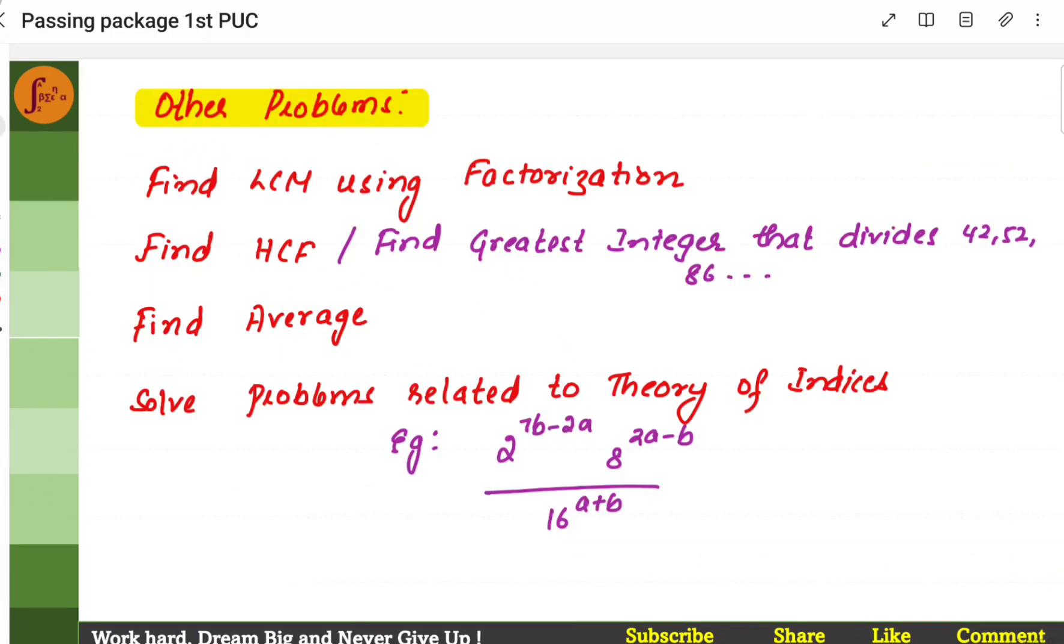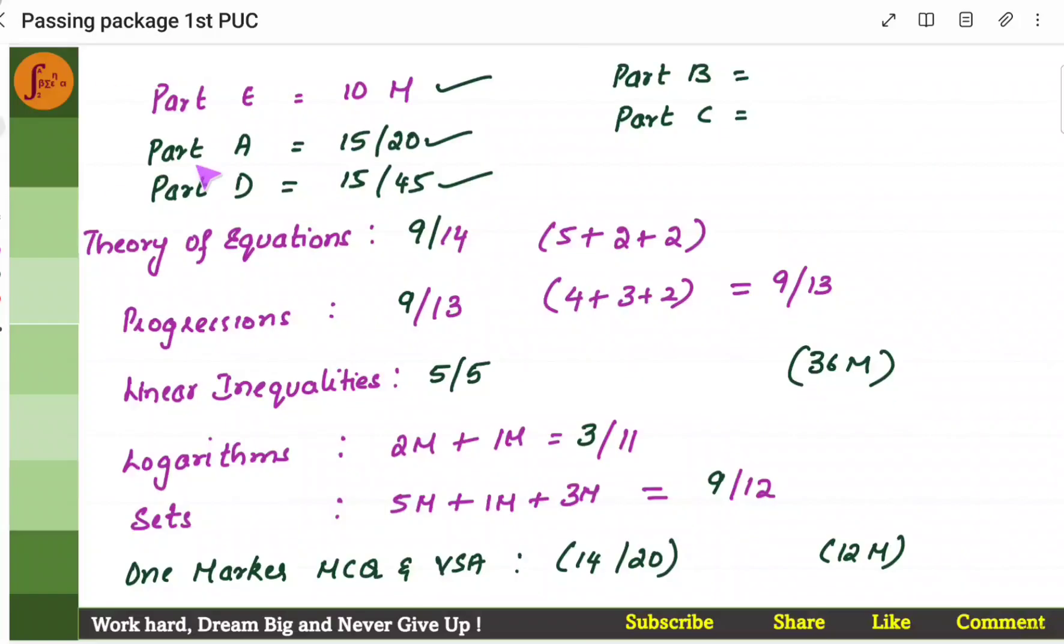Now, there are other problems also, such as finding LCM using factorization, finding HCF, problems related to HCF. That is, finding greatest integer that divides certain set of numbers. Finding average. Then, problems related to theory of indices. Two markers. You can focus on two marker and one marker of theory of indices. You have problems like this. You can focus on these kind of problems. Just look at all two marker problems from other chapters. Focus more on them. Now, roughly, from part A, we should be able to get 10 marks completely. We should be able to crack part A.